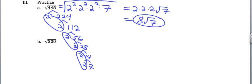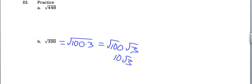Then I get 8 times the square root of 7. Okay, so that one I did with factor tree method. Next one, I'm definitely going to be using perfect squares method because I know that 100 is a perfect square and it goes evenly into 300. So then I get the square root of 100 times the square root of 3 which is 10 times the square root of 3.